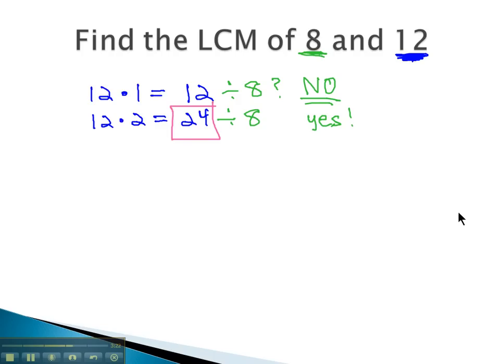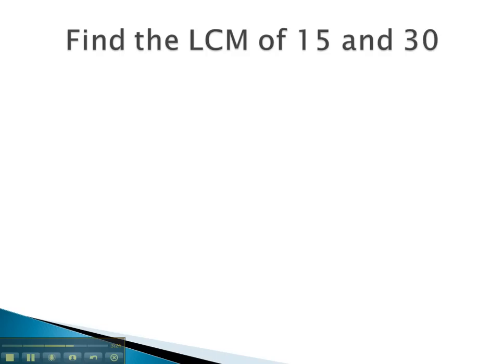Let's try one more example. Let's find the least common multiple of 15 and 30. Again, I'm gonna show the work here, but normally we would do most of this in our heads using mental math, starting with the bigger number.